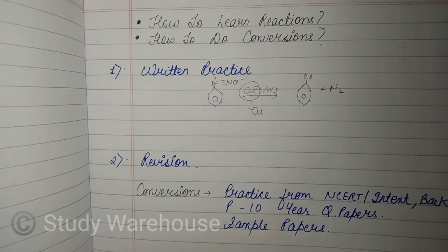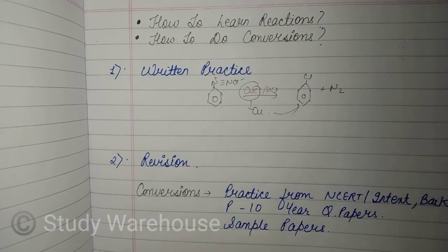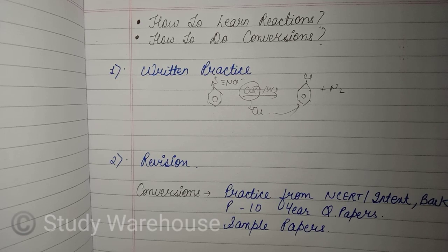Similarly in Gattermann's reaction, instead of CuCl, Cu (copper) is used. You can learn both reactions easily because both are interrelated. In this reaction also the same product — chlorobenzene — is formed, but the difference is that in Sandmeyer's reaction CuCl is used, while in Gattermann's reaction copper is used.